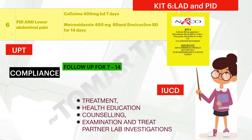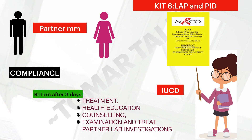For partner management, all sexual contacts of the patient from the last two months should be identified, investigated, and treated accordingly. The appropriate kit is also given to them based on their complaints. They should be educated and provided with barrier methods of contraception, and sexual abstinence should be practiced during the course of treatment.